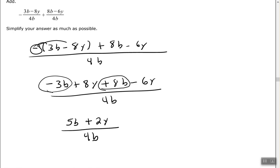Keep in mind, you can't simplify the b in the denominator with the b in the numerator, because in my numerator I have a binomial, 5b plus 2y, whereas in my denominator I only have a monomial. Binomials can only be canceled with other like binomials, so keep that in mind.